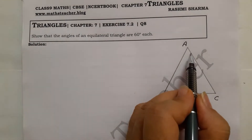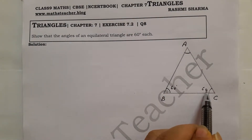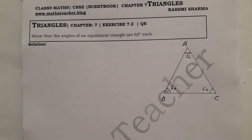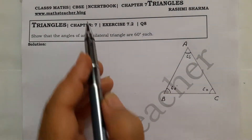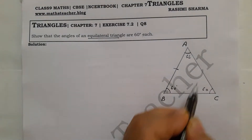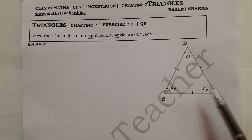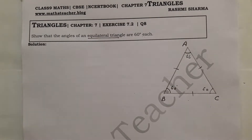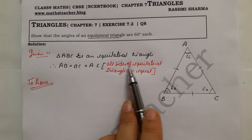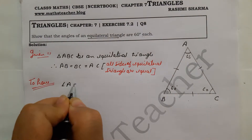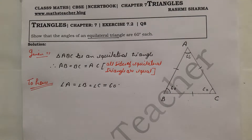We have taken triangle ABC. We need to prove that angle A, angle B, and angle C are all 60 degrees. To do this, we will use two things: the angle sum property, and the property of an equilateral triangle — which has three equal sides. We will use the property of an isosceles triangle to prove it.